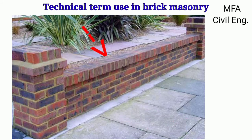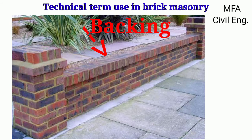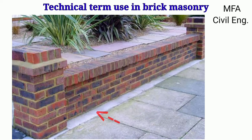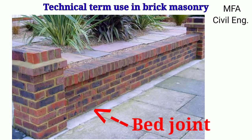The inner surface of a wall which is not exposed to the weather is called the back, and the material used in the back of the wall is called the backing. The bottom surface of a brick when the brick is laid flat is termed the bed, and the horizontal layer of mortar on which bricks are laid is called the bed joint.